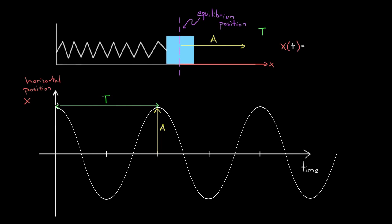So I want to use cosine, because cosine starts at a maximum. For cosine of zero—if you remember your trig functions—cosine of zero equals one. And since this is as big as cosine ever gets, and sine and cosine can only ever get as big as one, this thing is starting at a maximum. Cosine starts at a maximum at t equals zero, and I'm going to want to use cosine, but I'll have to add a few elements.